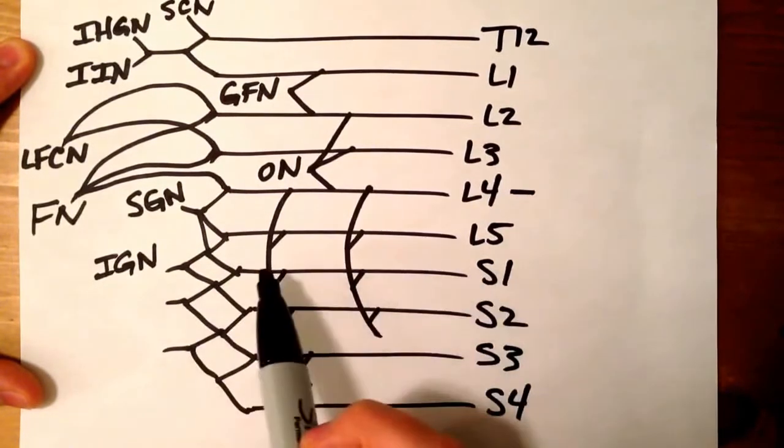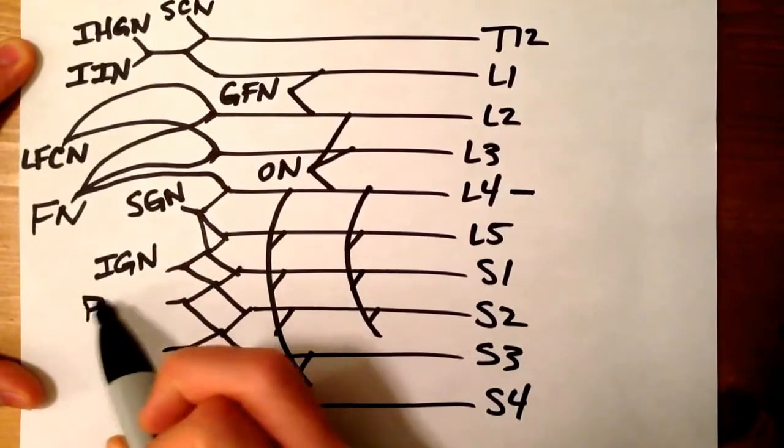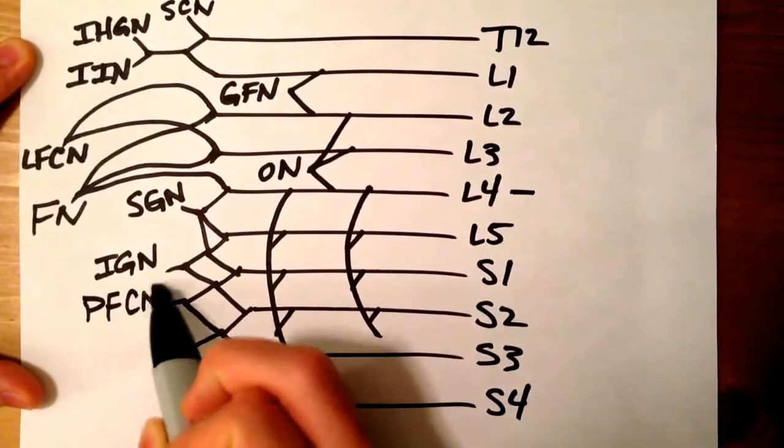Between S1 and S3, that is going to be your posterior femoral cutaneous nerve.